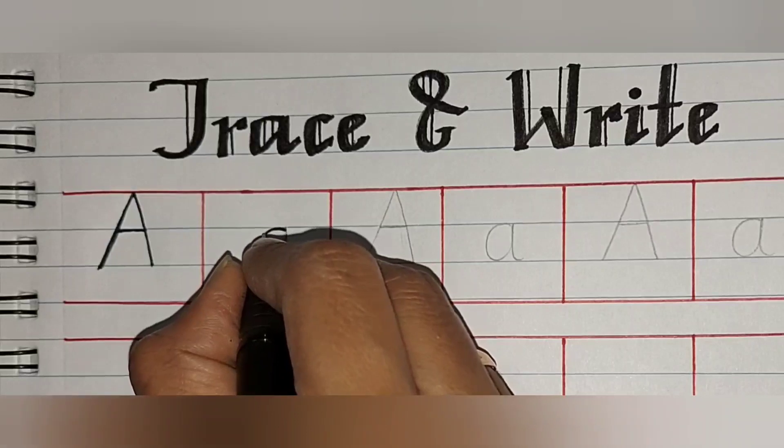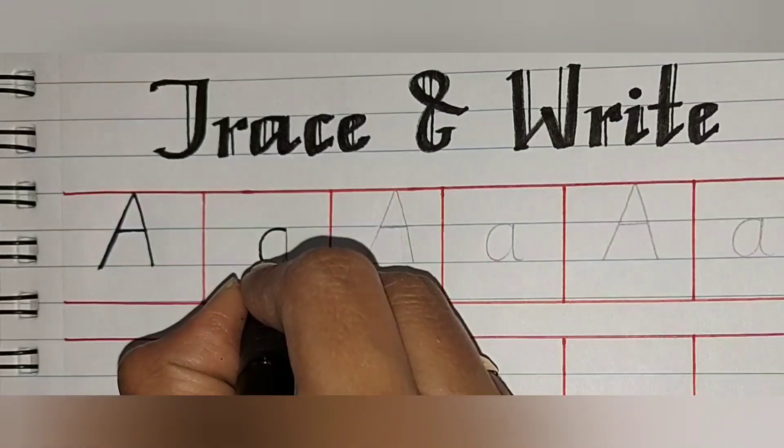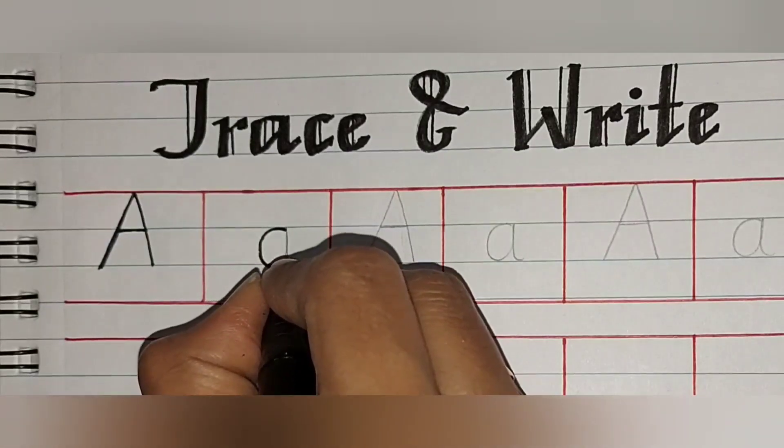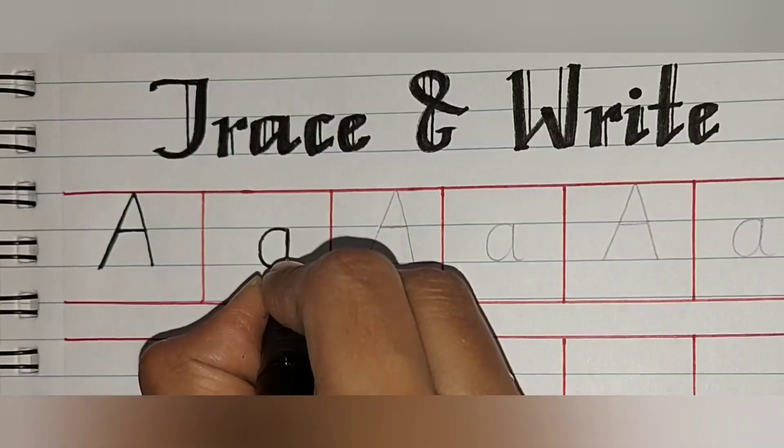To write small letter A, start from the first blue line to the second blue line, write a left C curve and a standing line on the same line in a small curve.